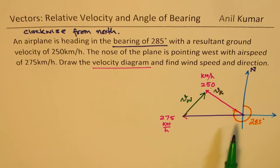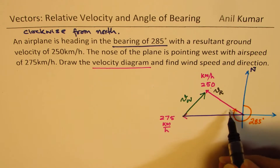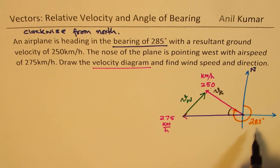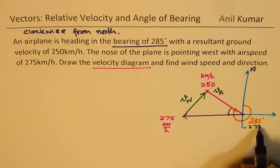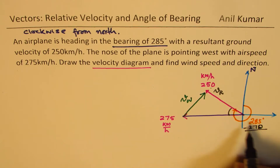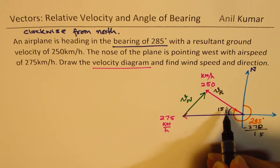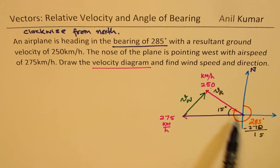The plane's heading is 285 degrees and the plane is pointing west, which is 270 degrees. So this angle between the two vectors is 285 minus 270, which gives us 15 degrees. So the included angle in our triangle is 15 degrees. 270 plus 15 is 285 — confirmed.